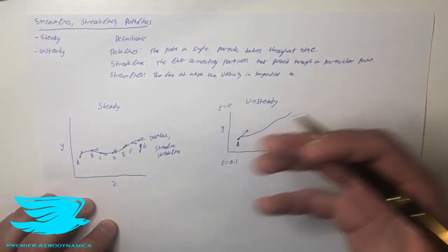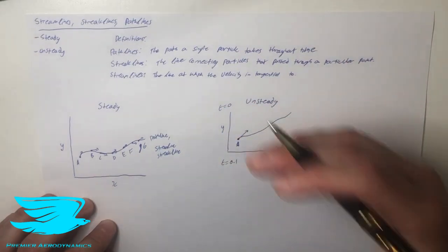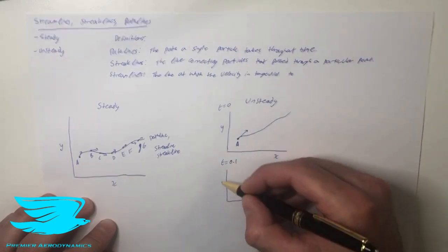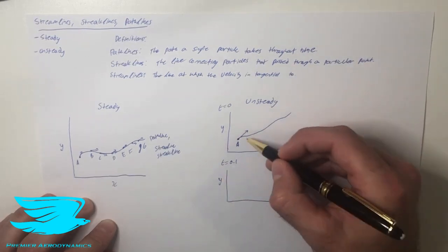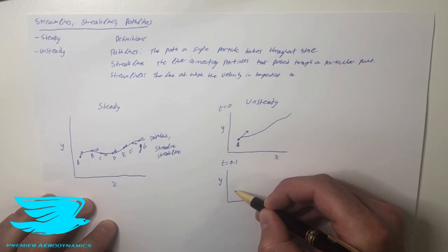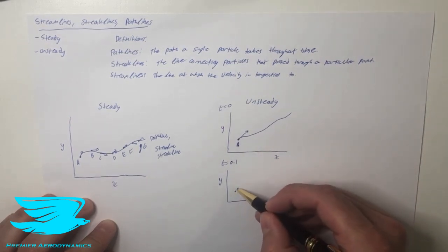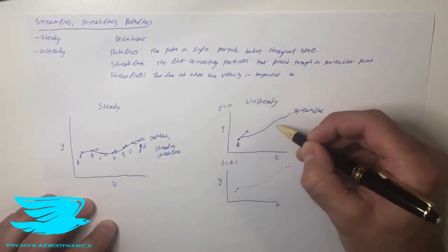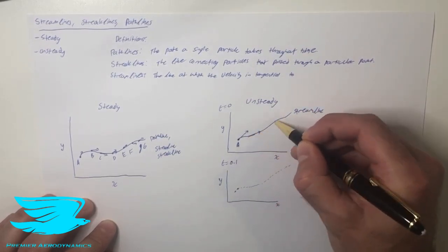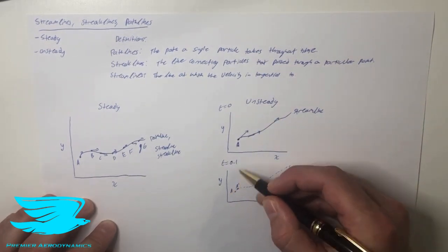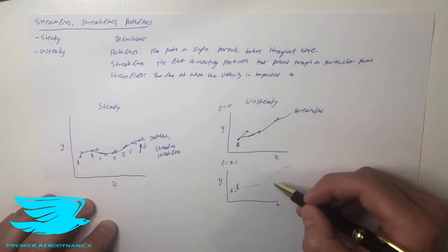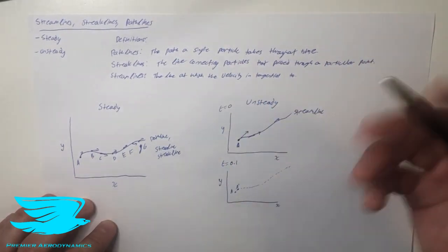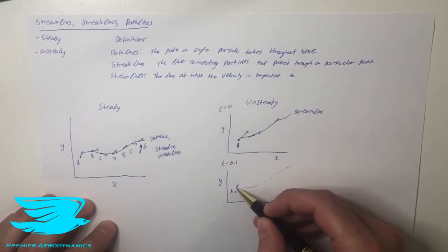So we fast forward to time equals 0.1 — time is incremented one step. We know that the particle which started here has now moved to a new position, following the original streamline. The only problem is, at T equals 0.1, this streamline is no longer the same because the time has changed. The flow is unsteady, so the velocity field changes. Before it was this dotted line; now it's actually going to be different.